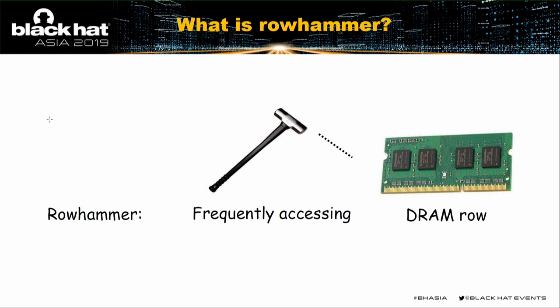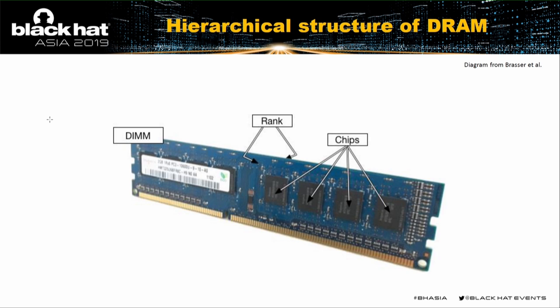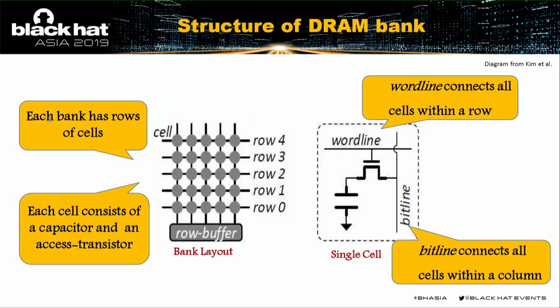Let's dive into the background of the DRAM structure. DRAM stands for dual inline memory module. It has one or two ranks corresponding to its front or back side, and each rank has multiple chips. Multiple chips make up multiple banks. Each bank has rows of cells, and each cell consists of a capacitor and an access transistor. The wordline connects all cells within a row, and the bitline connects all cells within a column.